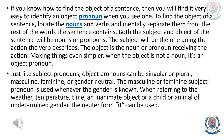The masculine or feminine object pronoun is used whenever the gender is known. When referring to the weather, temperature, time, an inanimate object, or a child or animal of undetermined gender, the neuter form 'it' can be used.